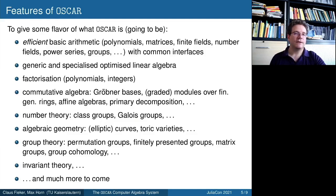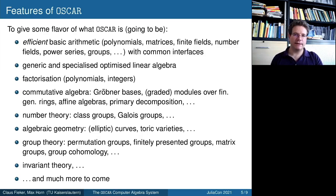Features of OSCAR. So what are the features of OSCAR? The following list is both too long and too short — it doesn't list everything OSCAR can do, and it also lists a few things that are currently still work in progress. It's meant to give you an idea of the flavor of things OSCAR can do. We provide efficient basic arithmetic — working with polynomials, matrices, finite fields, number fields, power series, groups — all these common interfaces.